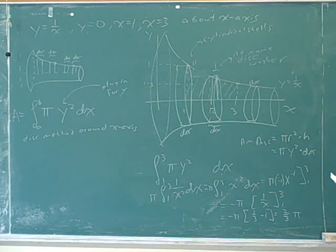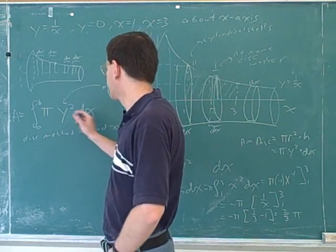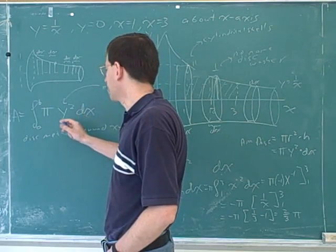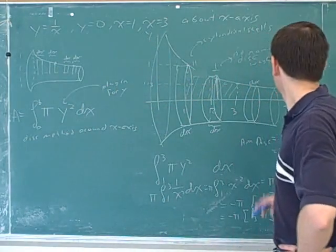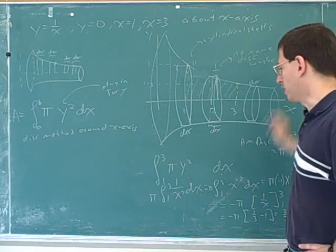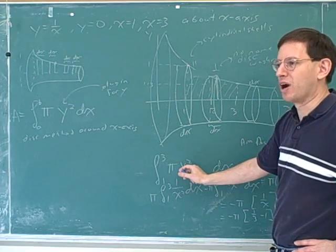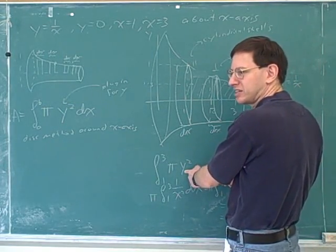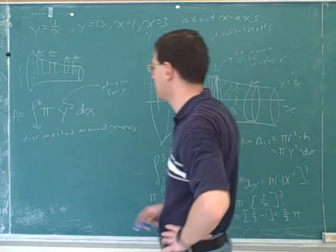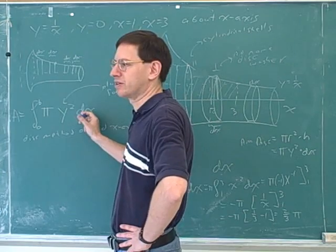What do you need to plug in for y? Well, if you're taking an integral with respect to x, everything has to be in terms of x. So for example in this case, y was 1 over x. So I started by writing this formula, but then I plugged in 1 over x for y. Because this antiderivative can't be taken yet. You can't take the antiderivative until everything is in the same terms as your variable of integration.